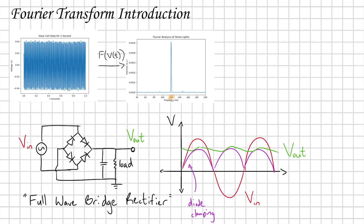First things first, we can clearly see that we have this peak centered at 120 hertz, and that is indeed the strongest frequency in this signal. Why do we actually have that frequency? We did this Fourier analysis on home lights. How do we actually get electricity off of the grid? That is going to be coming in as an AC current, and in order to make use of that at our home, we want to convert that AC signal into a DC signal.